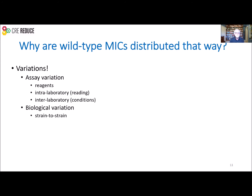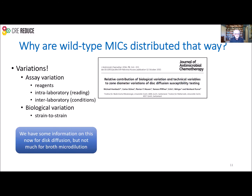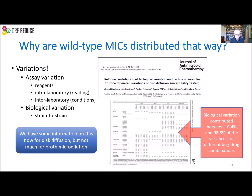One of the questions we have to ask is: why do we see MICs distributed across a range of values? We don't know the relative contribution from those different sources of variation for each individual. A colleague in Switzerland did some work with zone diameters to try to sort this out, with no consistent findings — it varied between bugs and between drugs. For some combinations, strain-to-strain biological variation was dominant; for others, almost all of the variation was due to intra-laboratory variation.